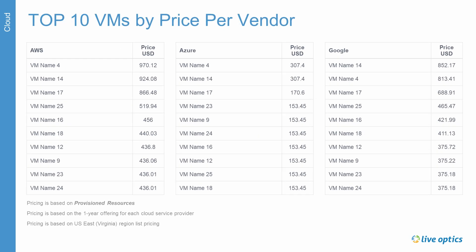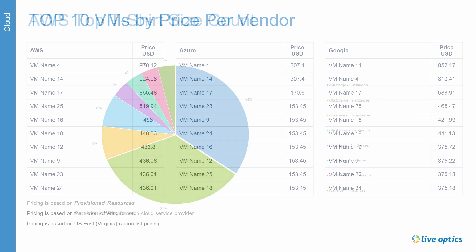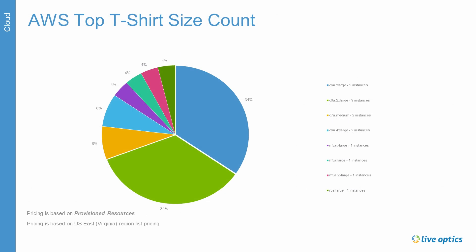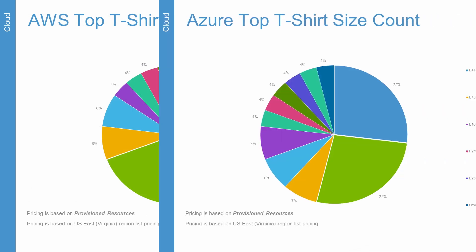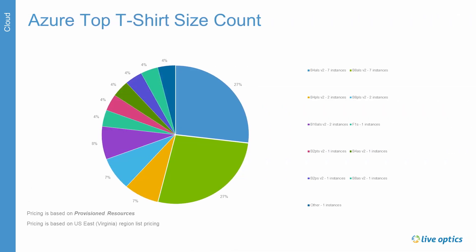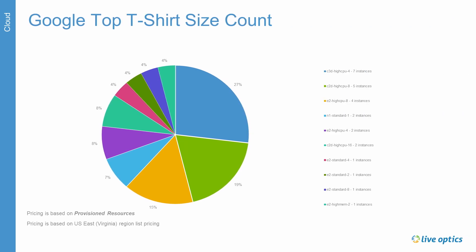Here we list the top VMs by price per vendor. Since the VM configuration is matched to the closest t-shirt size in the respective public clouds, the top most expensive virtual machines may not be the same across all the public clouds. The AIR Report also provides a pie chart of the t-shirt size counts for AWS, Azure, and Google Cloud.